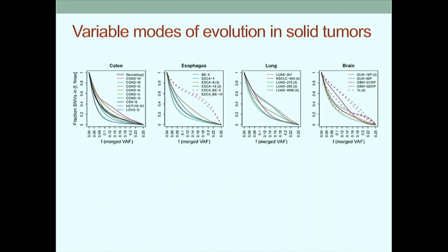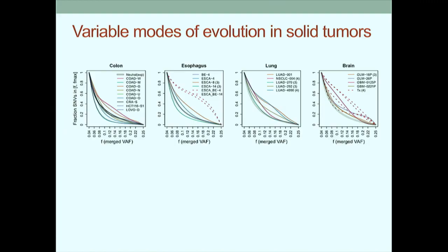We can compare what the site frequency spectrum looks like for different histologies relative to the theoretical neutral, and we spiked in a few other interesting samples to get a handle on how well we were measuring selection in actual patient tumors.